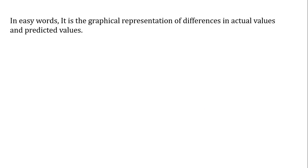In easy words, it is the graphical representation of differences in actual values and predicted values. Whenever we have to measure the loss in classification, we have an advantage because values are discrete, and discrete values can be differentiated very easily between actual classes and predicted classes. It requires four building blocks: true positives, true negatives, false positives, and false negatives.